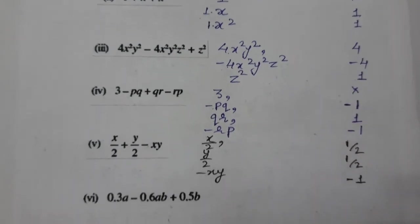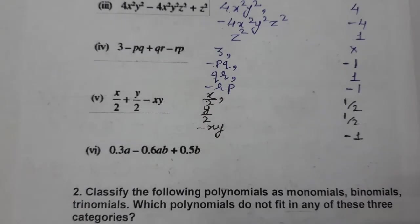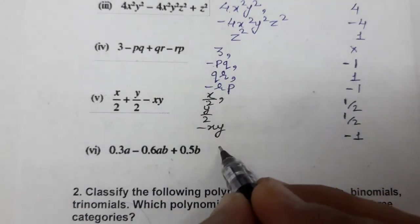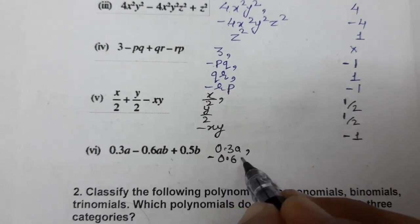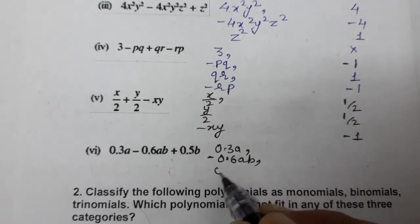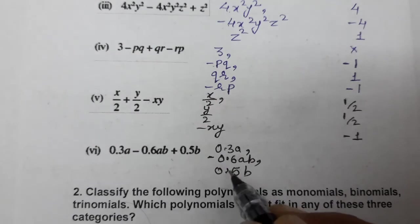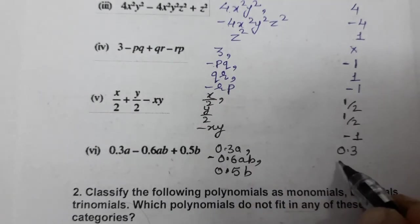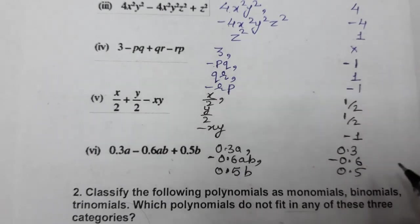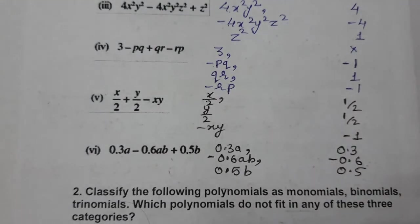Now comes the sixth one: 0.3a, this is the first term. -0.6ab, this is the second term. And 0.5b, this is the third term. So what are the coefficients? 0.3, -0.6, and 0.5. This completes question 1. Now we will do question number 2.